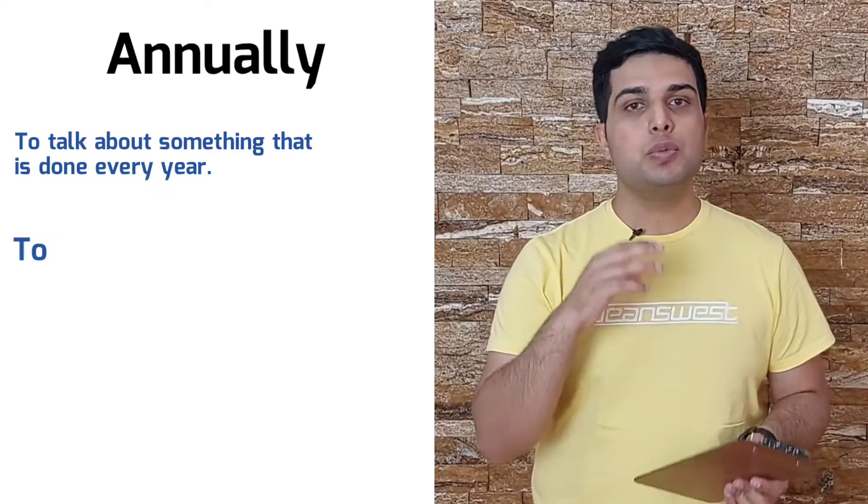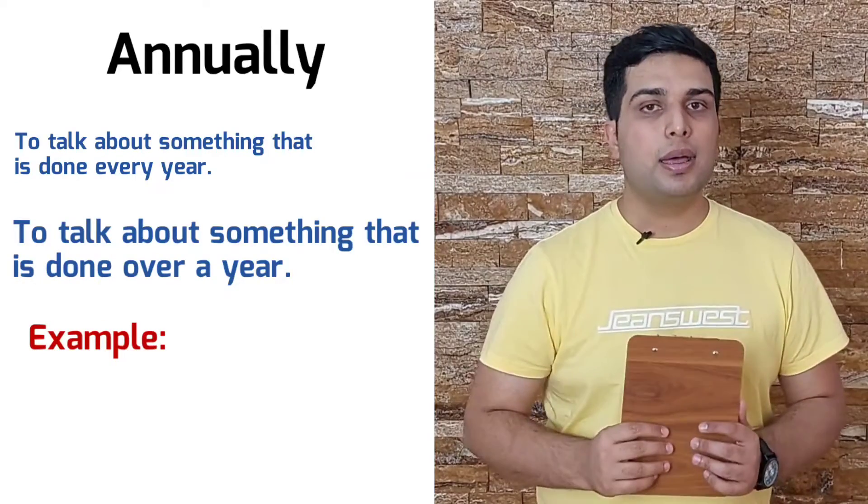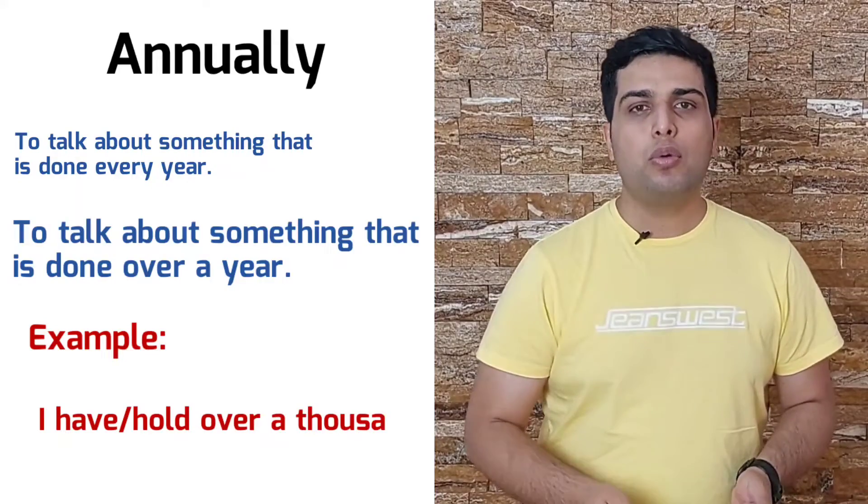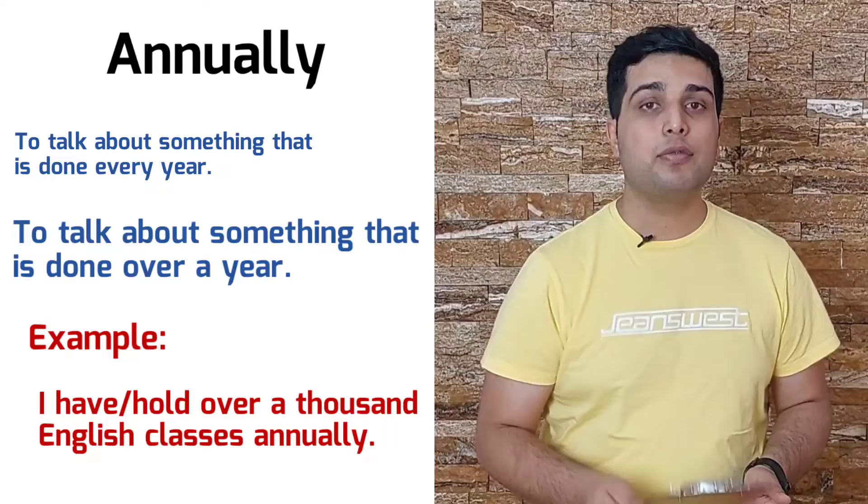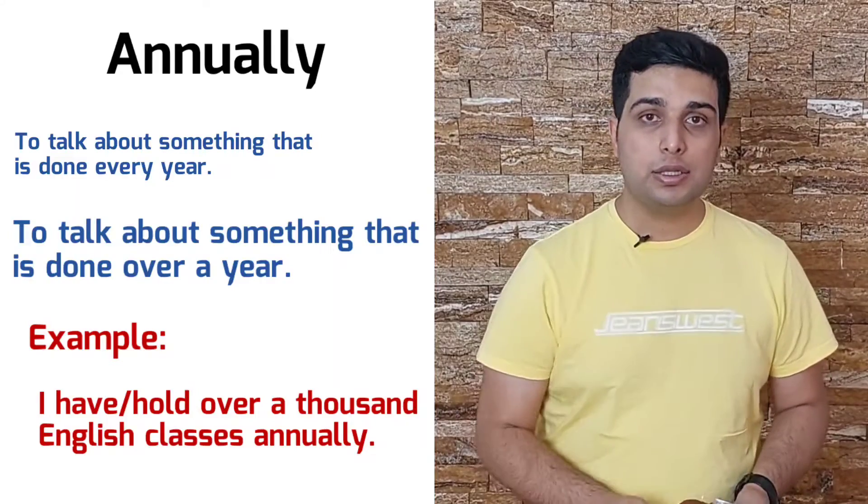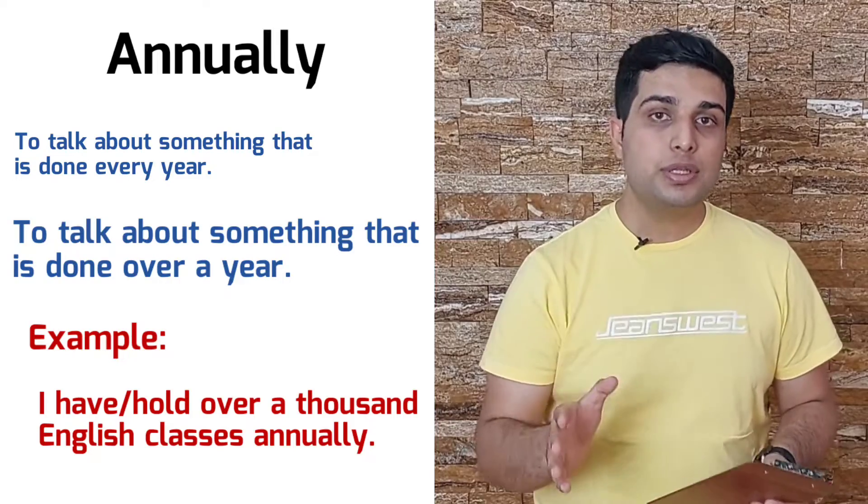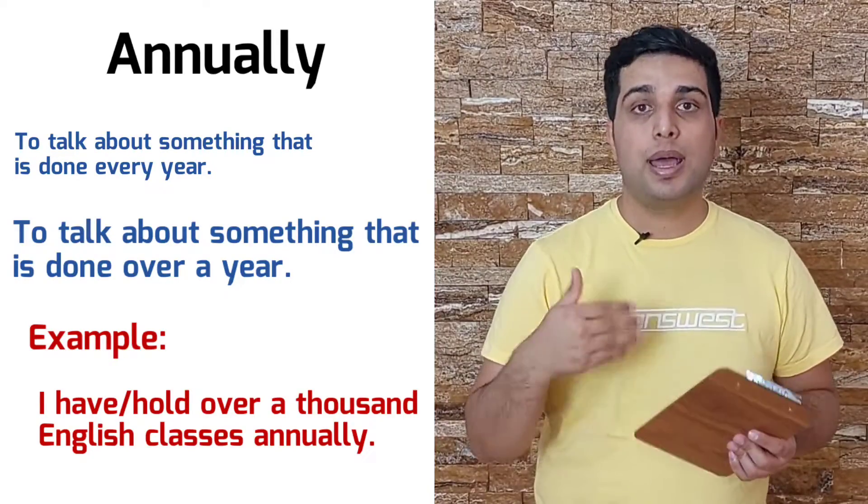Another meaning refers to when we do something over a year. For an example, I, as an English teacher, can say I have or I hold over a thousand English classes annually. In this case, it means I have more than one thousand English classes during each year. And I would do these classes, I would finish these classes in each year, annually.